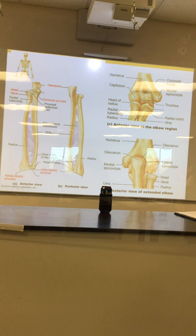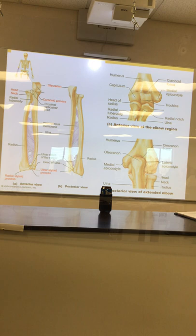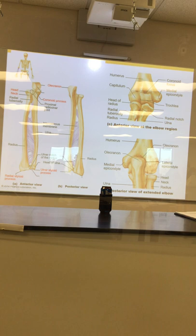First things first. On the humerus: I'm going to ask you right or left. The olecranon process is on the back of the arm, and there's the head where it connects to the glenoid cavity. If that's the back and that's the head, it's got to be a right — because if it were here my arm would bend backwards. You've got to do right and left on a humerus. For the ulna, it's easy to identify: it's got a U on it. Olecranon process, coronoid process — they stick off the bone.